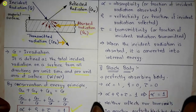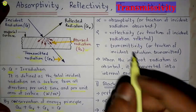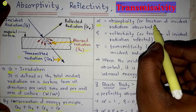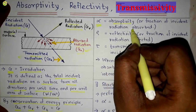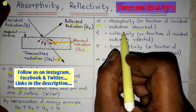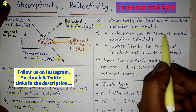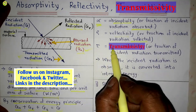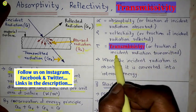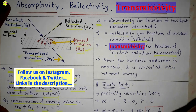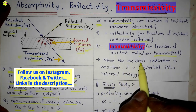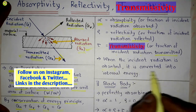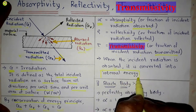Here, α is absorptivity, which is the fraction of incident radiation absorbed. ρ is reflectivity, which is the fraction of incident radiation reflected. τ is transmittivity, which is the fraction of incident radiation transmitted.